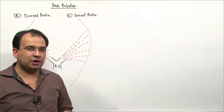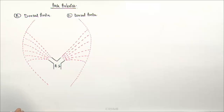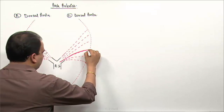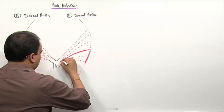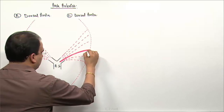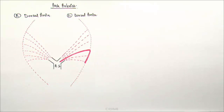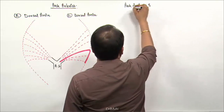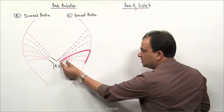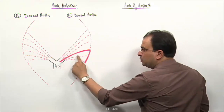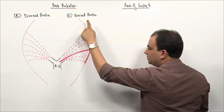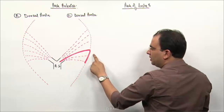Let us start with the major artery — the arch of aorta. Starting from here, the developmental components of the arch of aorta are: this is the left horn of the aortic sac, this is the fourth arch artery, and this is a piece of the left dorsal aorta. So: left horn of aortic sac, left fourth arch artery, left dorsal aorta.